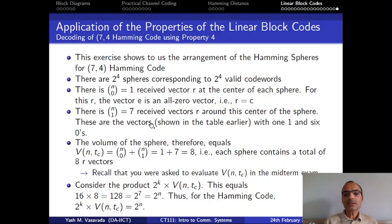And these received vectors are shown on the prior slide, which has 1, 1 and 6 zeros, for the case when transmitted codeword is all 0 vector. So the volume of the sphere, V(n,tc) equals n choose 0 plus n choose 1, which is 1 plus 7, which equals 8, which means that each sphere contains a total of 8 r vectors. Why did we go only up to n choose 1? Because tc equals 1 for this Hamming code.